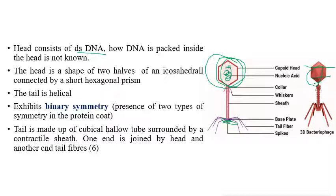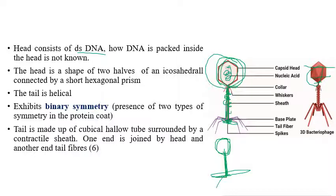The tube is surrounded by a contractile sheath. At one end the tube is connected to the head, and at the other end it is connected to the tail plate that consists of six tail fibers. At the first end of the tube, the head contains the double-stranded DNA genome packed inside. On the opposite end, a tail plate is present where six tail fibers are attached. This is about the morphology of bacteriophages.